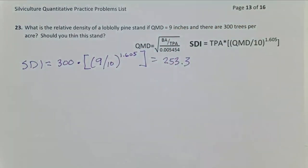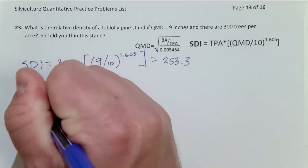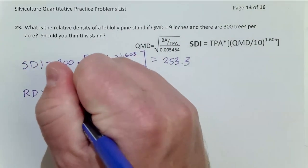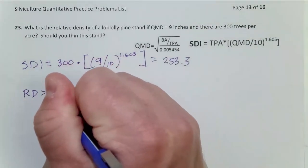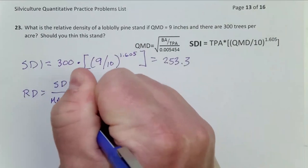So that's our current SDI of our stand. Now we need to use that to look at relative density. We know relative density equals the SDI current, which we have, divided by the max SDI for that species.